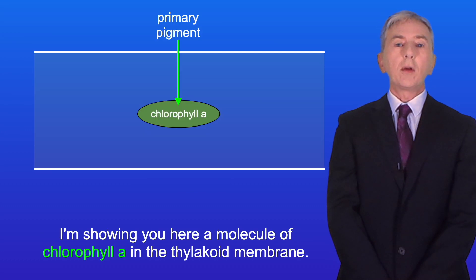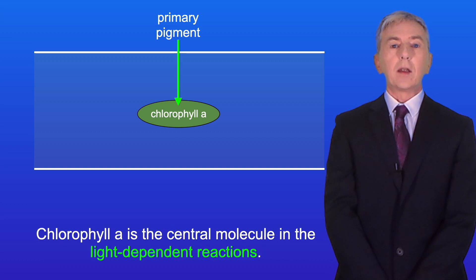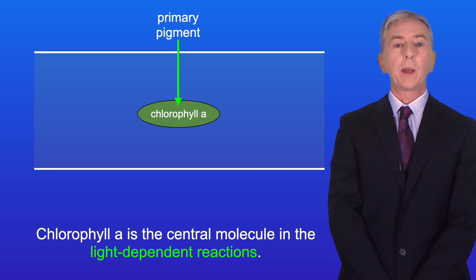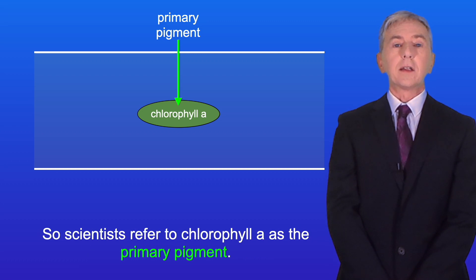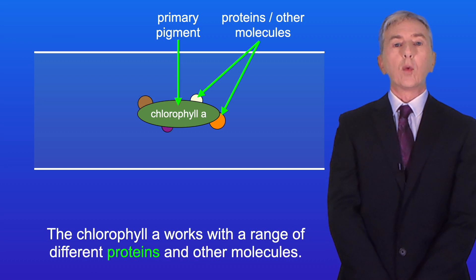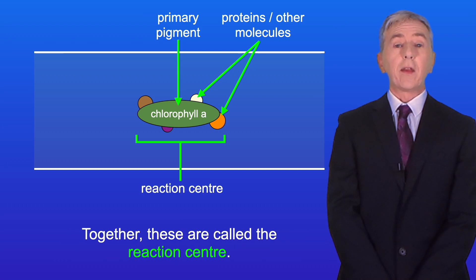Here is a molecule of chlorophyll A in the thylakoid membrane. Chlorophyll A is the central molecule in the light dependent reactions, so scientists refer to chlorophyll A as the primary pigment. Chlorophyll A works with a range of different proteins and other molecules, and together these are called the reaction center.